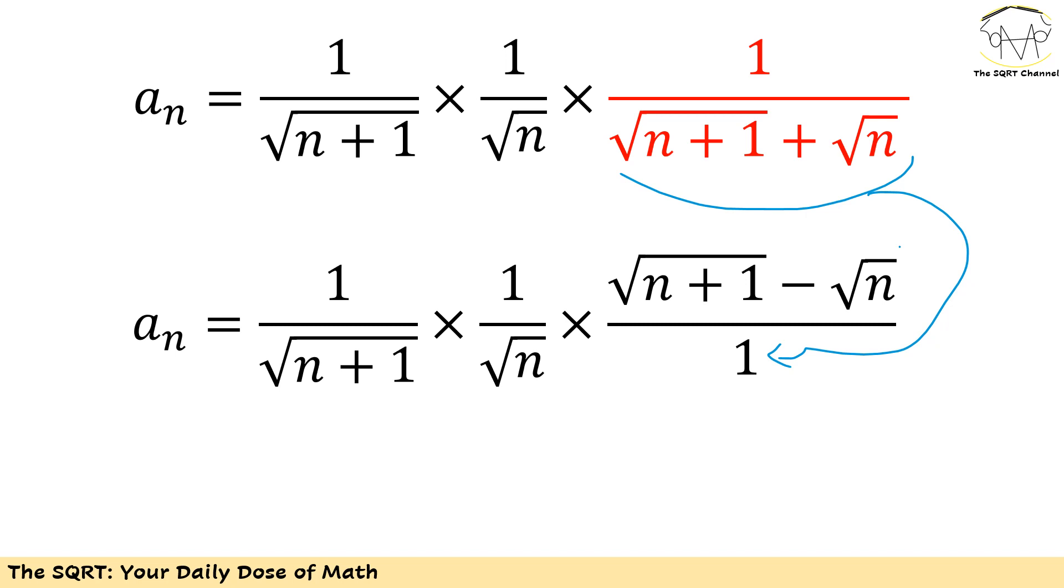To do this I'm going to multiply both numerator and the denominator by √(n+1) minus √n. As you can see the denominator is going to be just 1 and then I will have √(n+1) minus √n for the numerator.